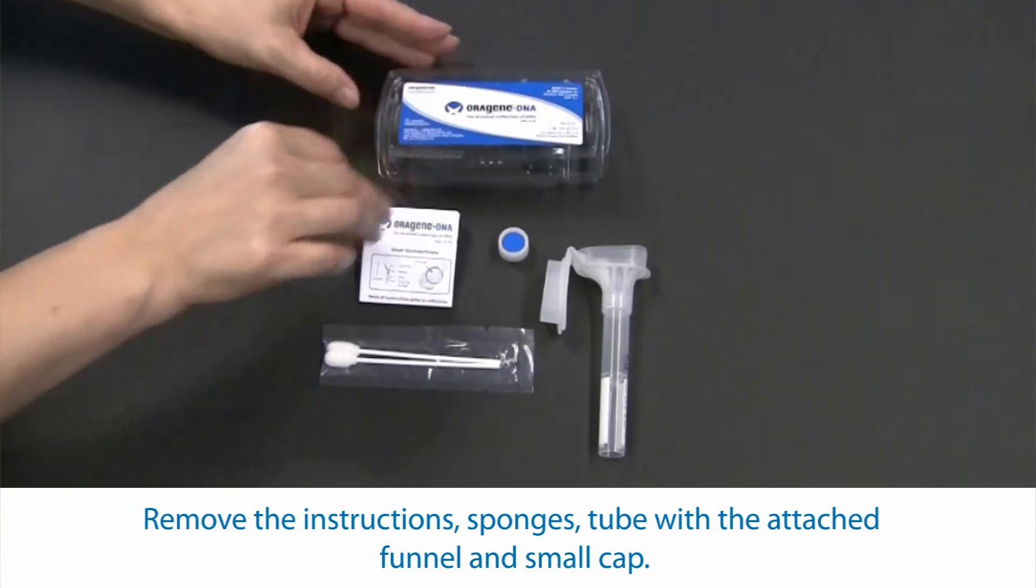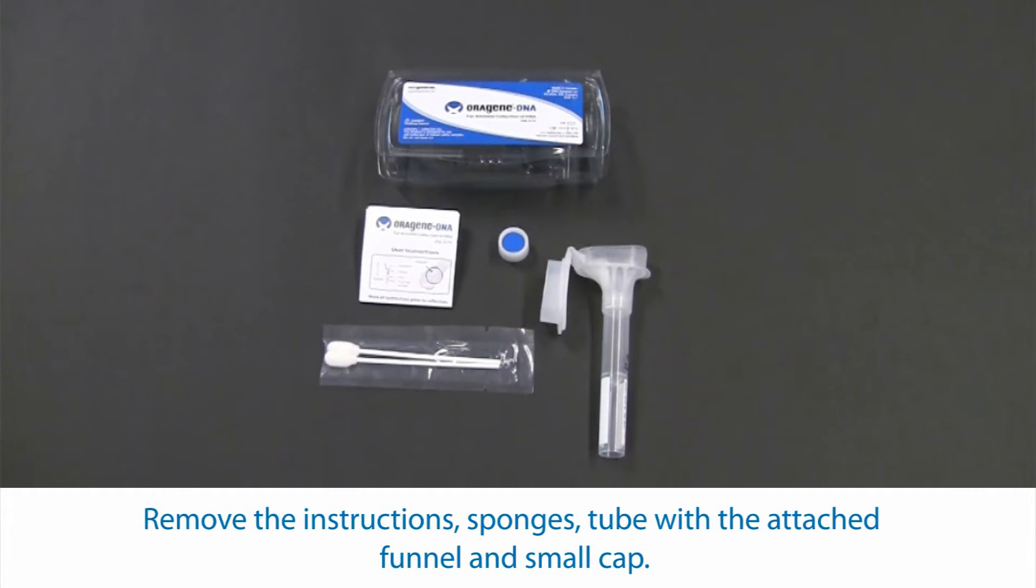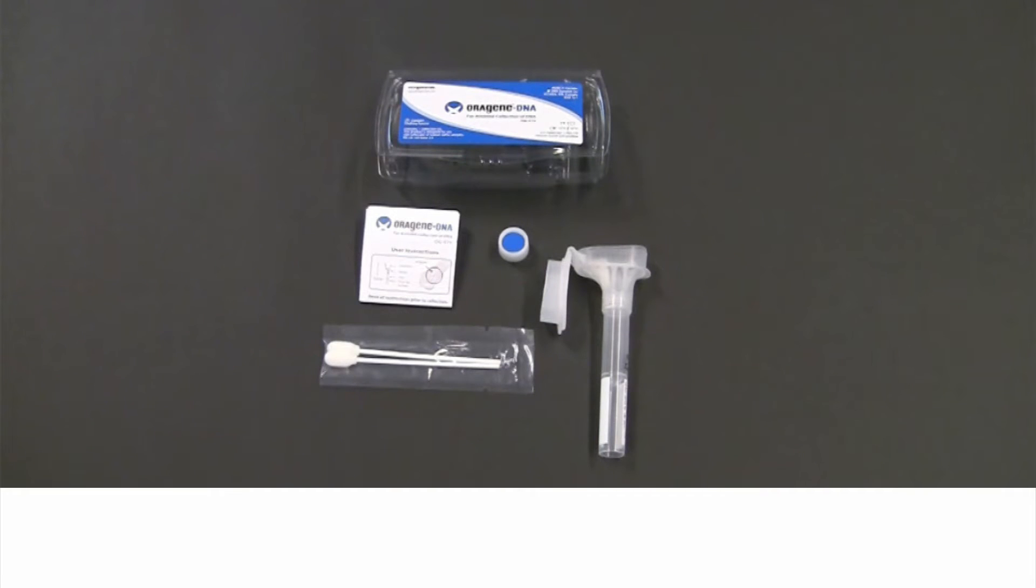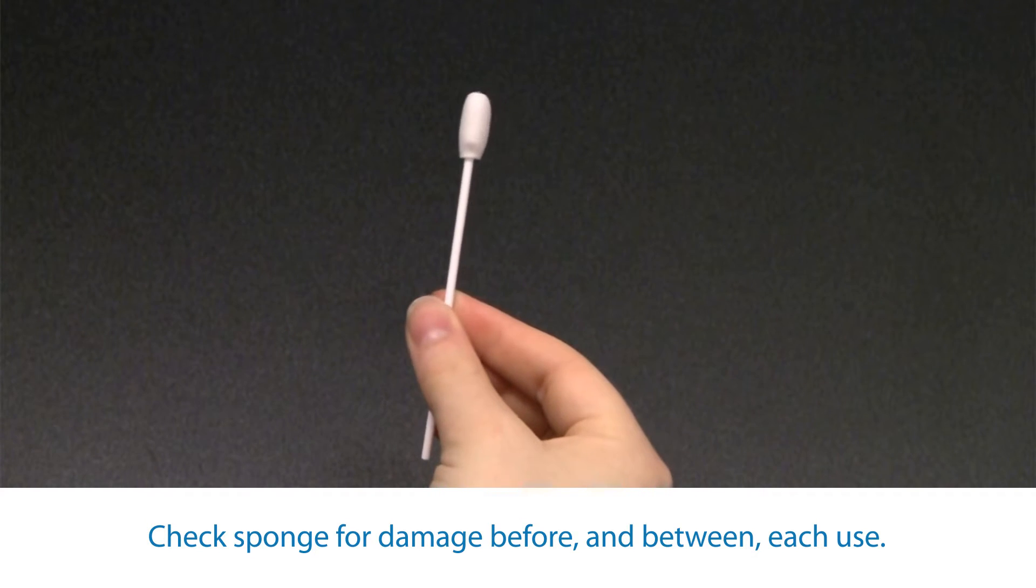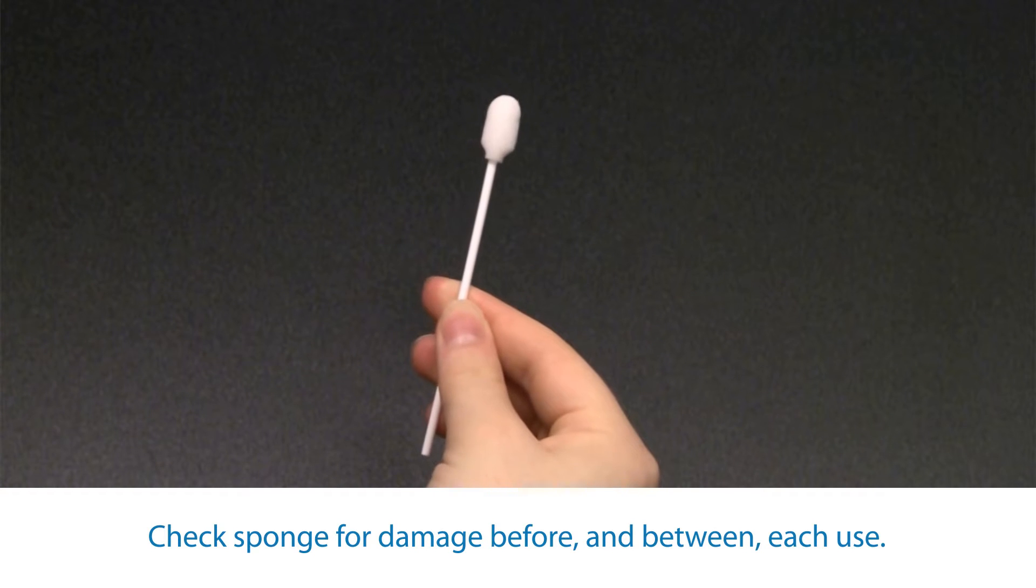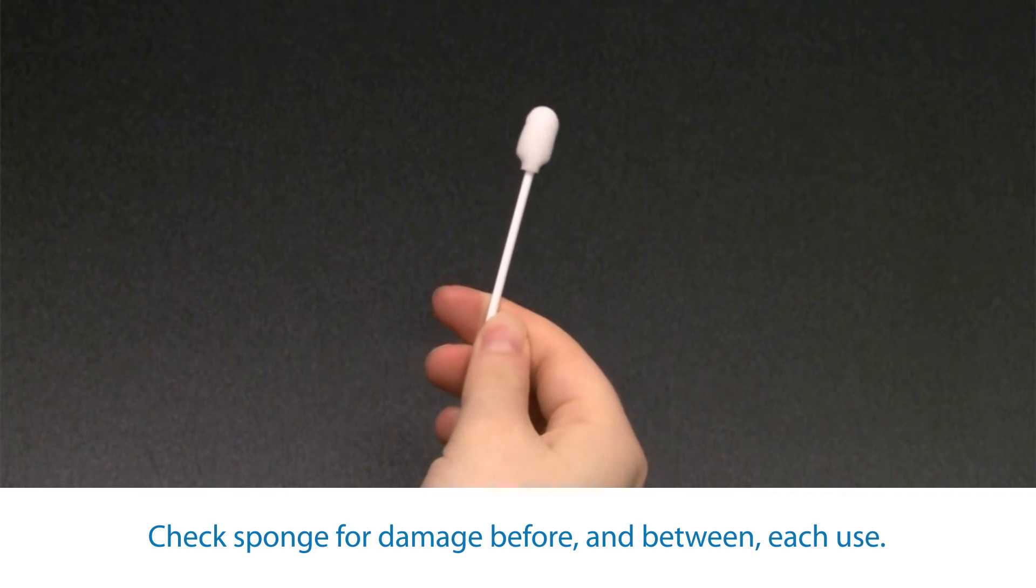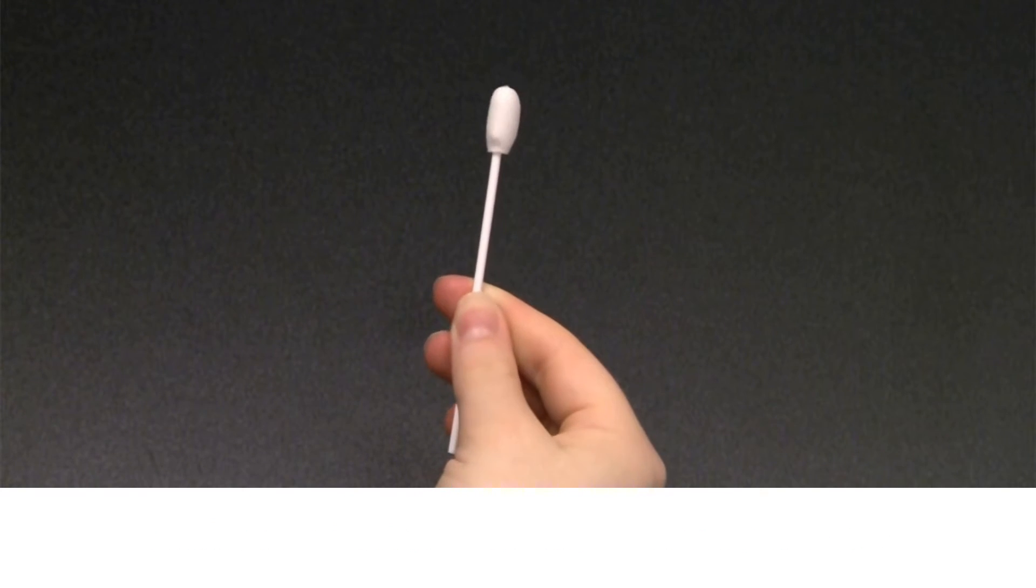Do not allow those requiring supervision to handle the sponges or small cap, as they may present a choking hazard. Check sponge for damage between each collection and before inserting it into the donor's mouth. Use the second sponge, provided as backup, if the first sponge shows any signs of wear or tear. Do not substitute with any other sponges or swabs.